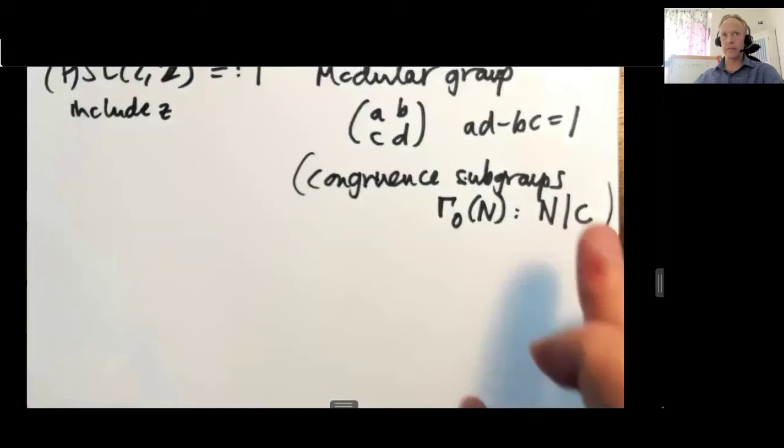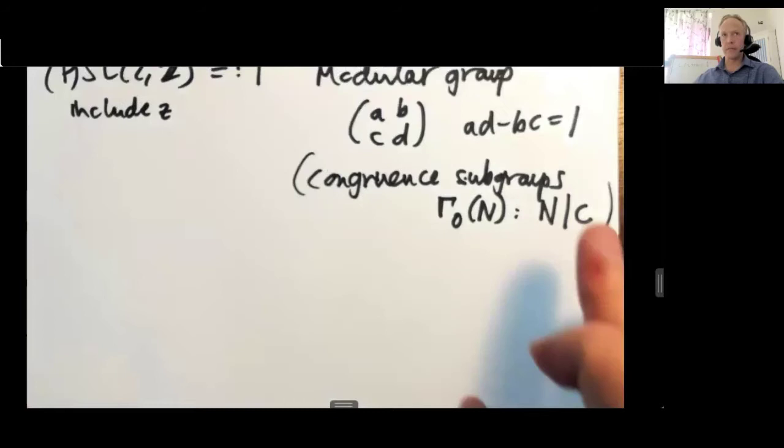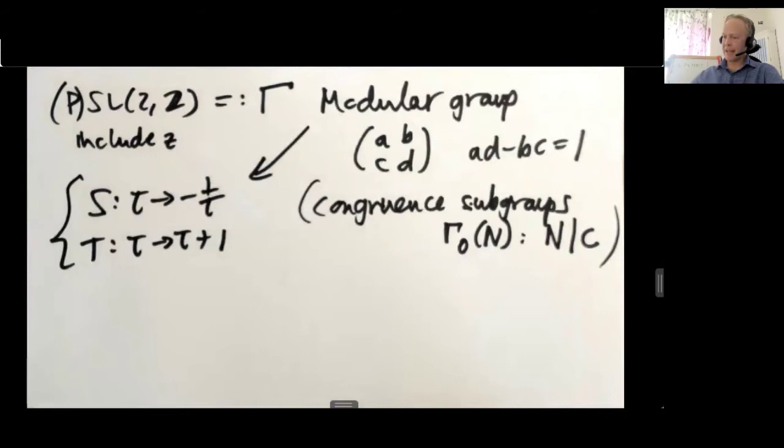And this is of some interest in general. But for now, let's just focus on the modular group itself. And the modular group is generated by S transformation, which is tau goes to minus 1 over tau, and T transformation, which is tau goes to tau plus 1. And these two generate this group.